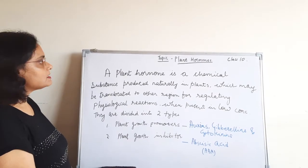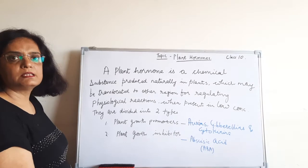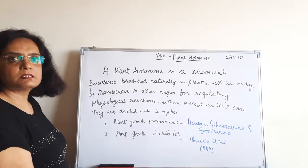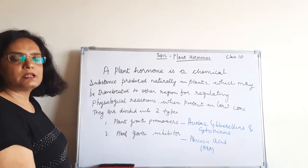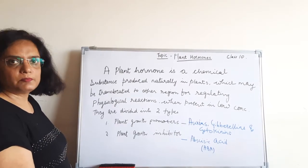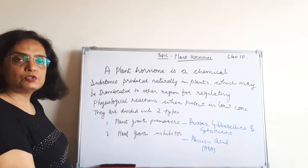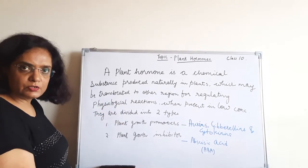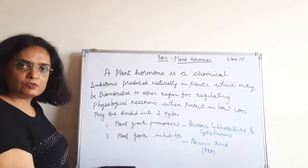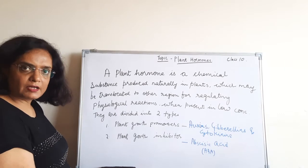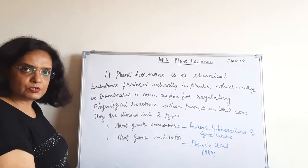Now, what is a plant hormone? A plant hormone is a chemical substance which is produced naturally in the plants, which may be translocated to other regions for regulating physiological reactions when present in low concentration.